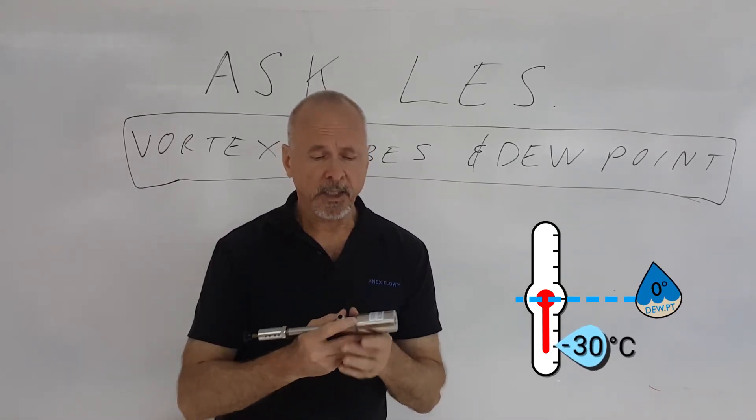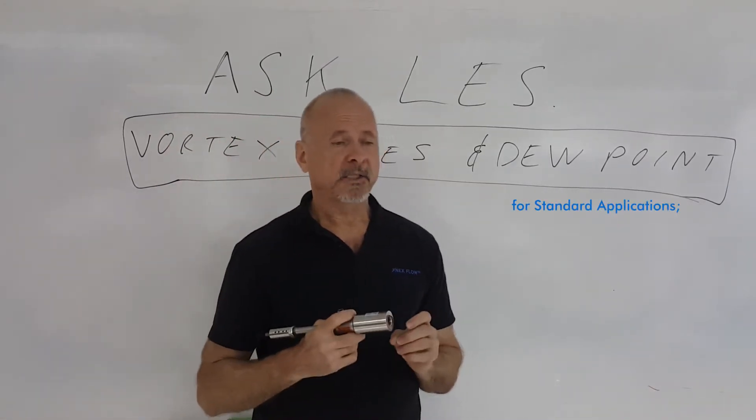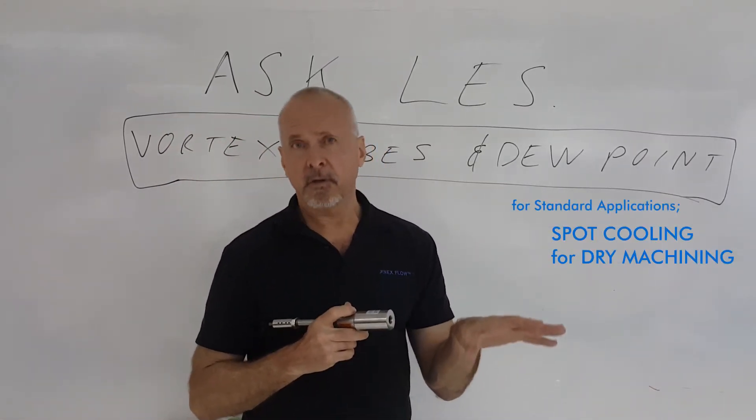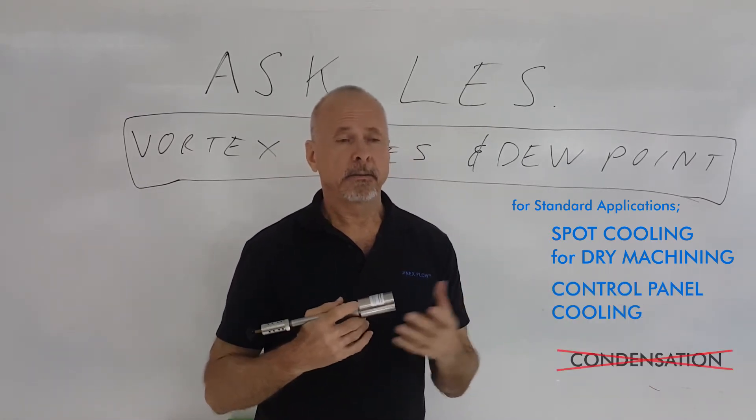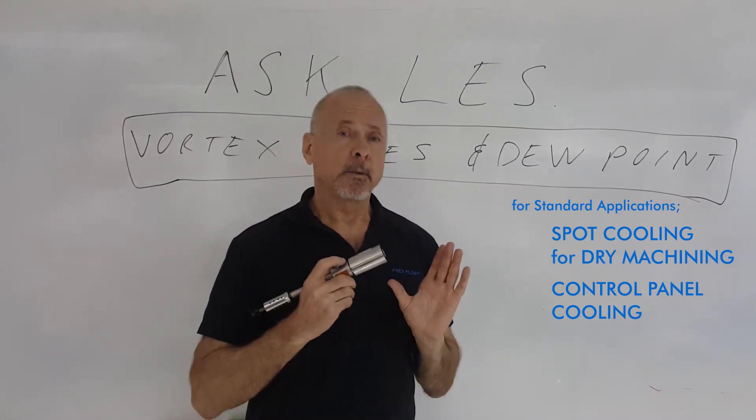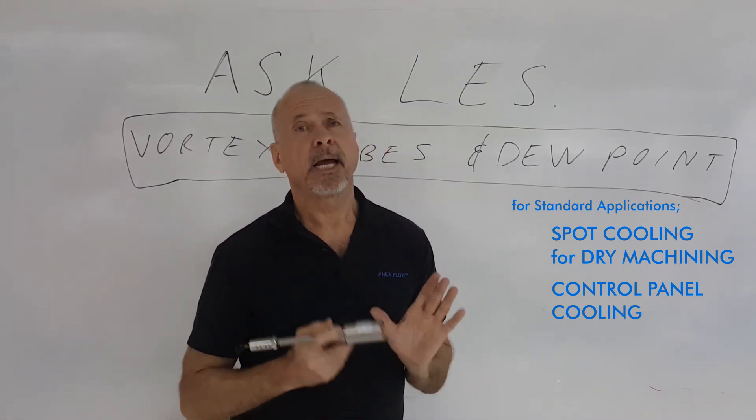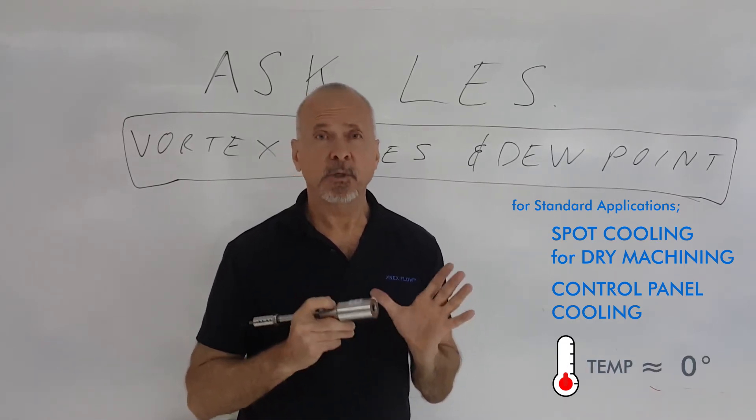So if you're using a vortex tube for normal cooling—spot cooling and dry machining, for example, or cooling a control panel where you certainly don't want condensation going inside—the vortex tube would be designed to have the temperature come out at around zero degrees Celsius. And that's what you want.